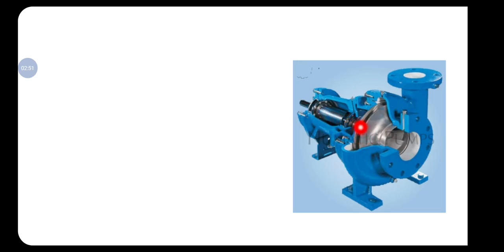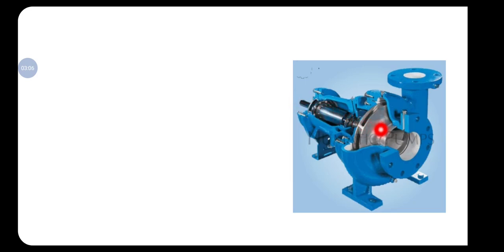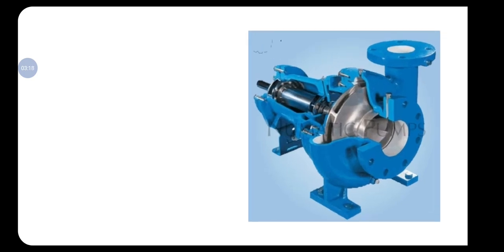This is the shaft, which is connected to the impeller. At the back side there is a motor or prime mover which imparts mechanical energy to rotate this rotodynamic element — the impeller. These are the general components of the pump.